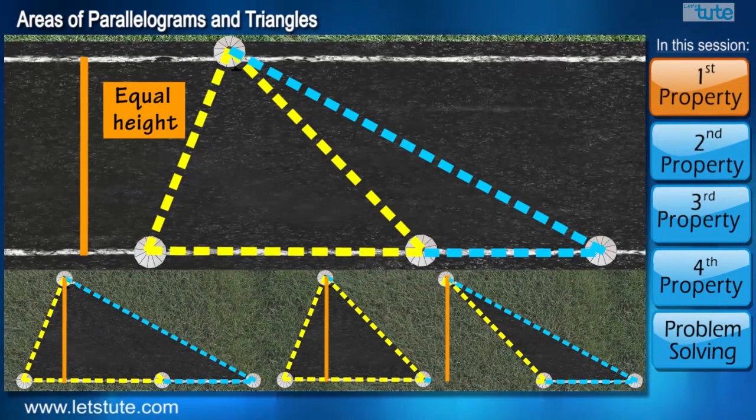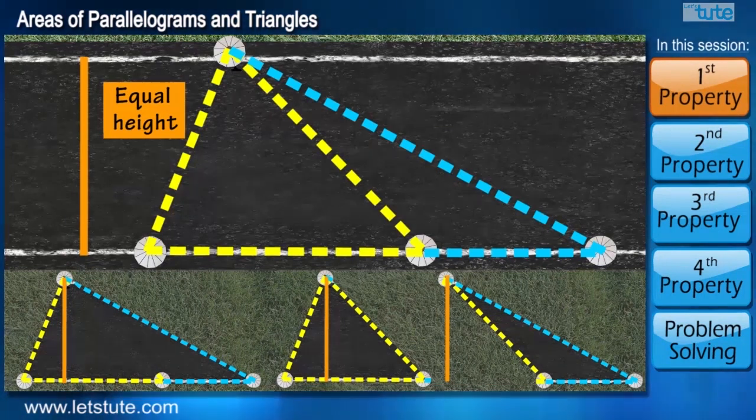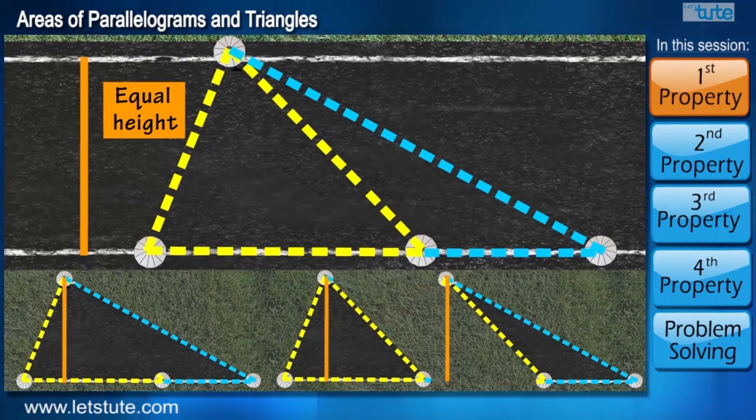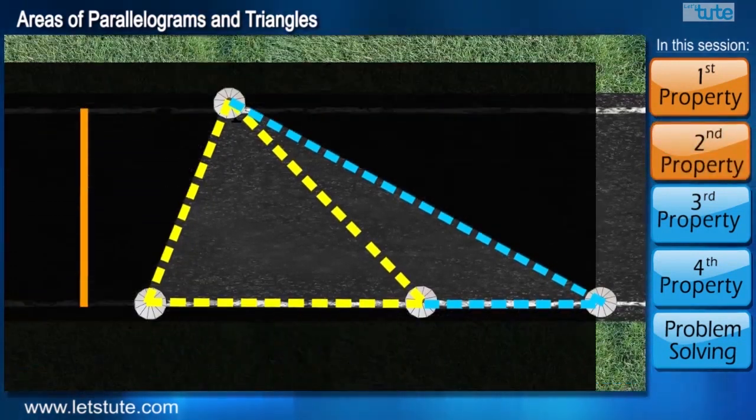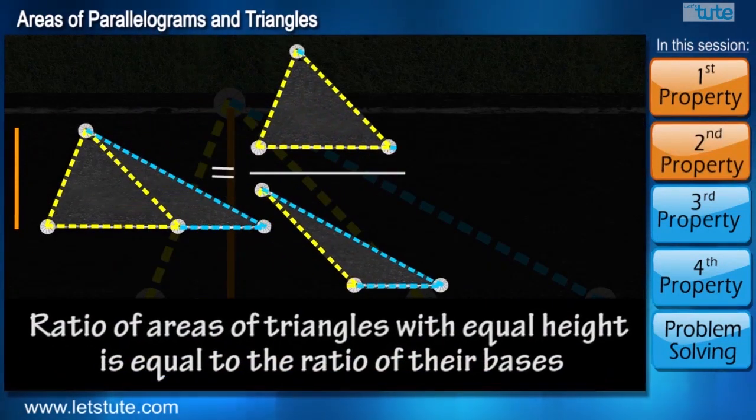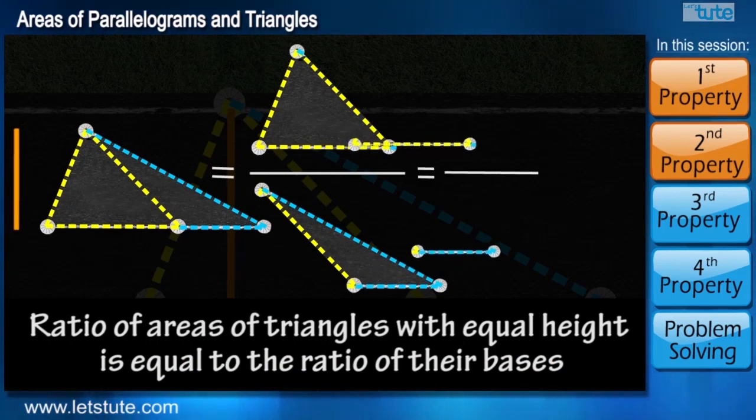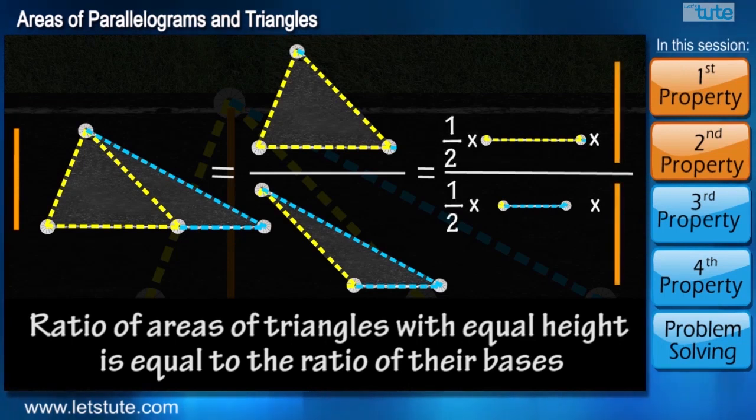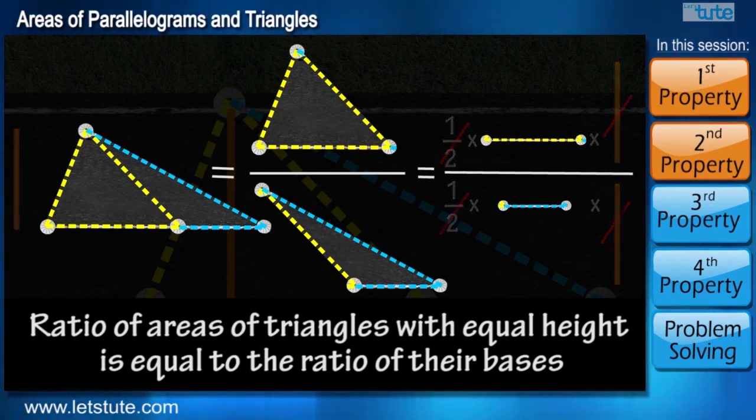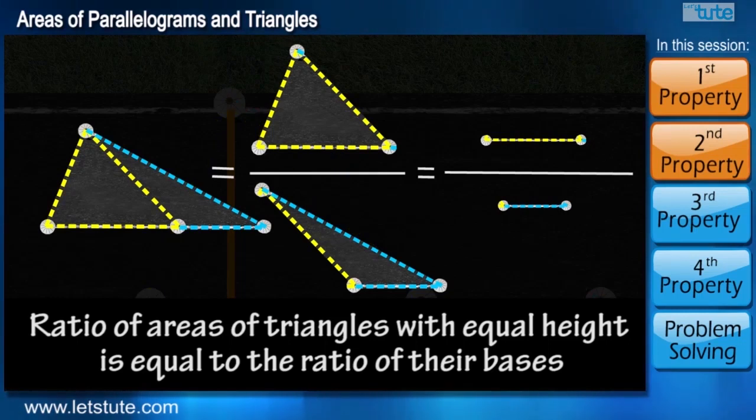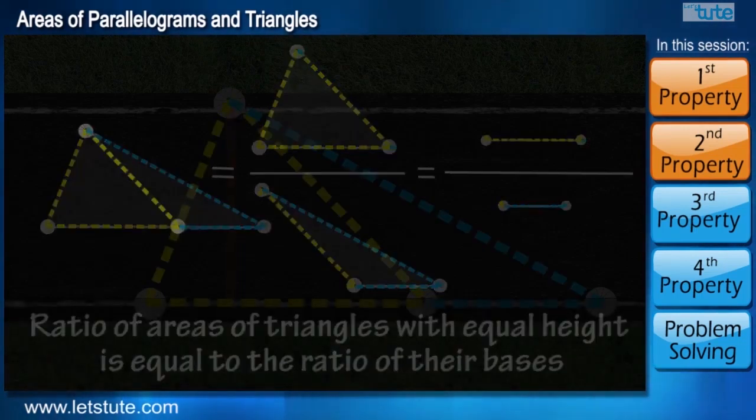And when we find the areas of these triangles, their areas will not be equal. But the ratio of their areas will be equal to the ratio of their bases. Because when we take the ratio of areas, the constant value half and the height will get cancelled out, and the remaining thing will be the ratio of the bases.